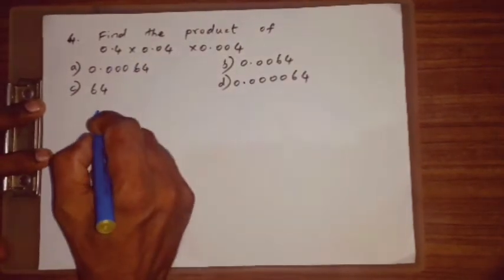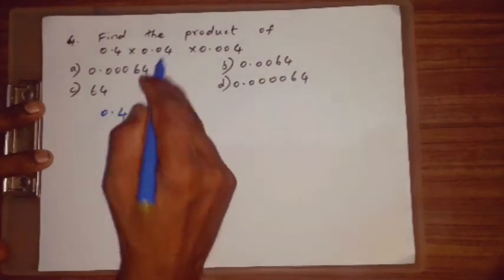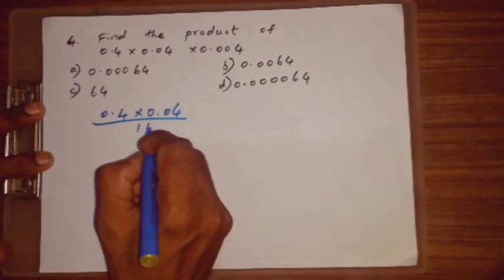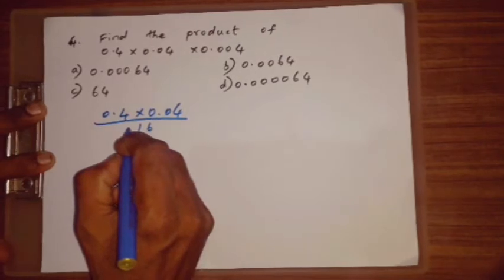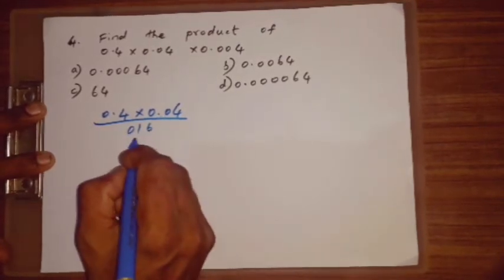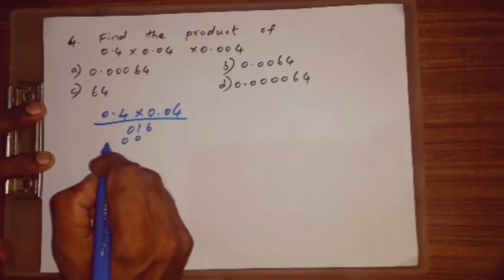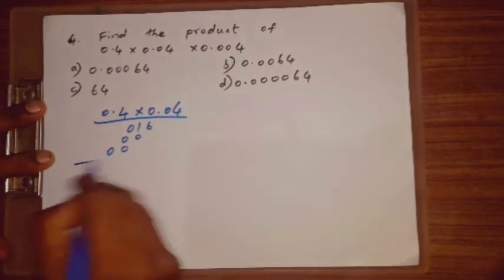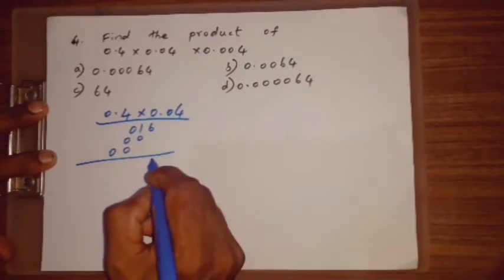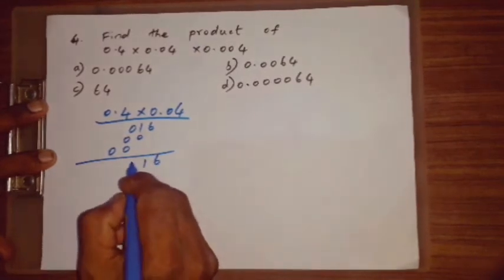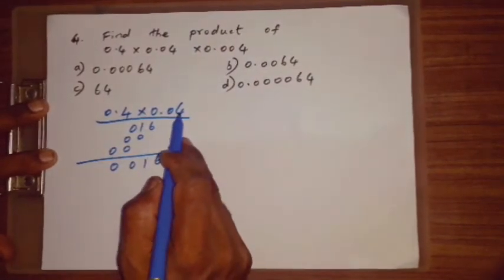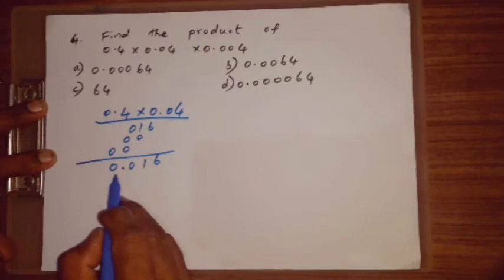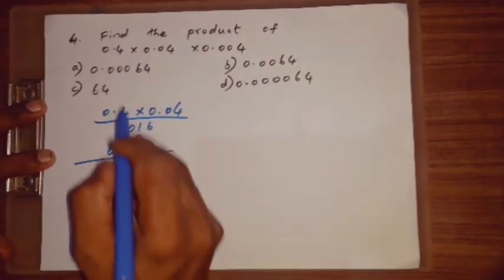So, 1st is 2, 1. 0.4 x 0.04. Even 4, 4's are 16. 4, 0, 0, 0, 4, 0, 0. Then another also 0, 0. Even 6, 1, 0, 0. Decimal also 1, 2, here 1, 3, 1, 2, 3. So 0.016. Next here.